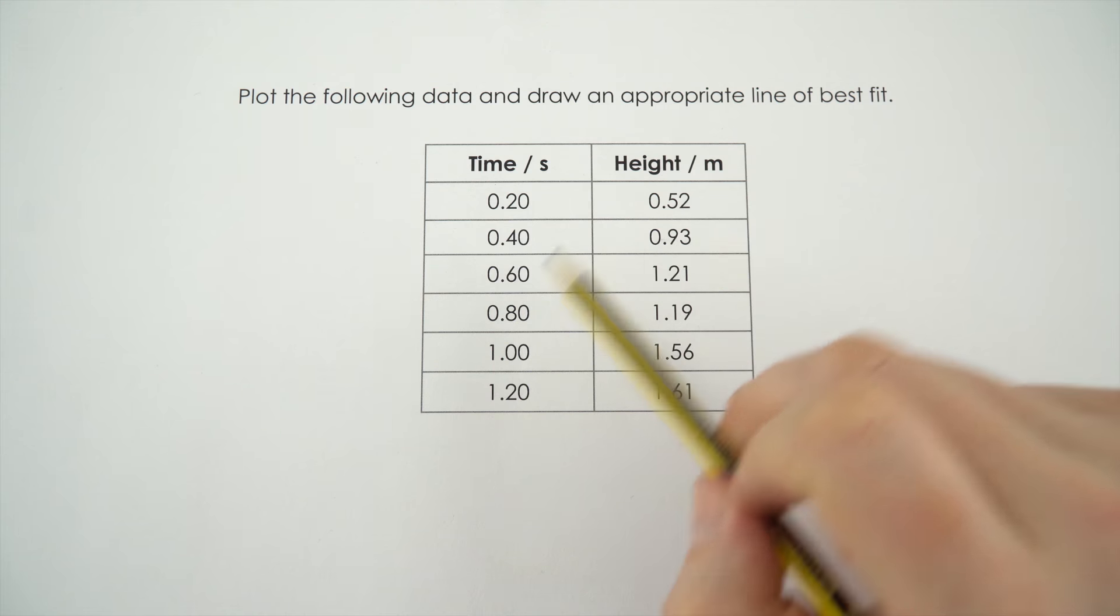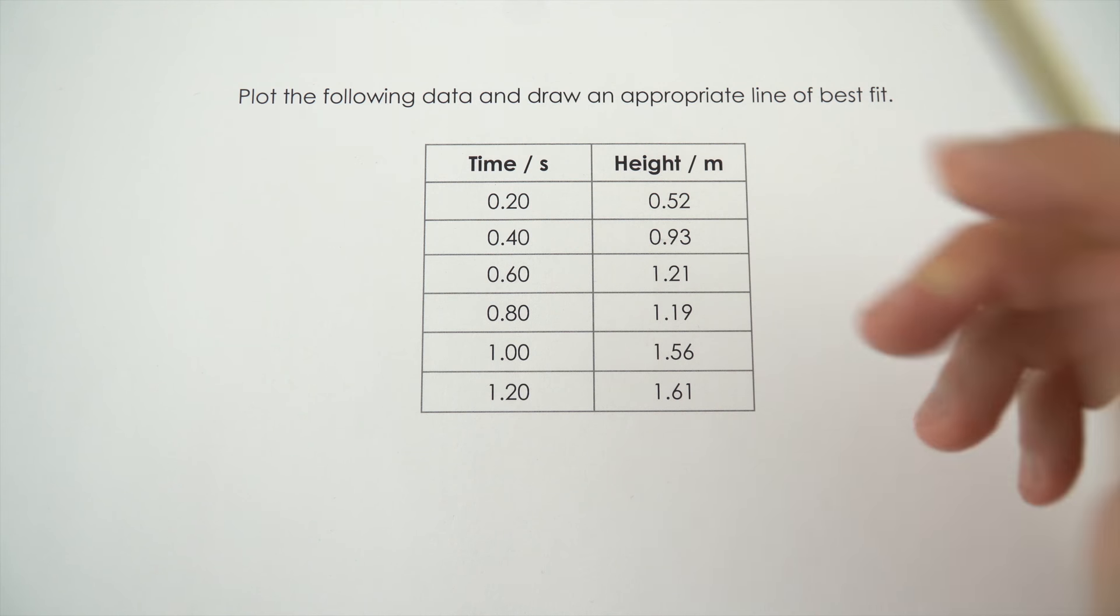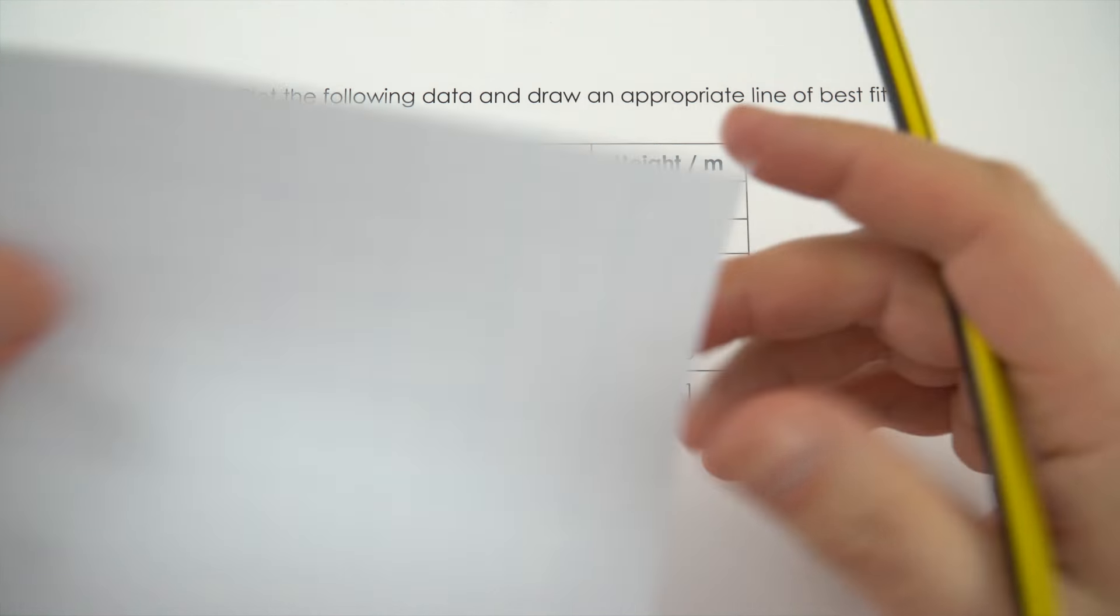So in this example we've got a little bit more data to plot and to draw an appropriate line of best fit. Again, this is something which is a key skill for GCSE physics.